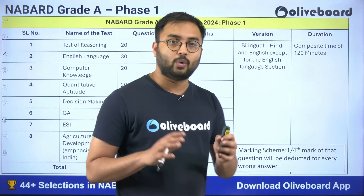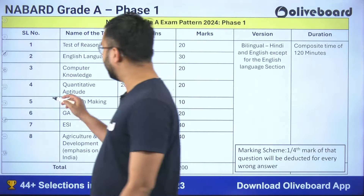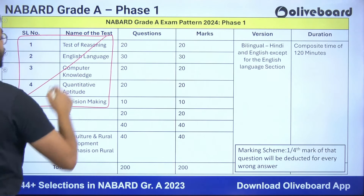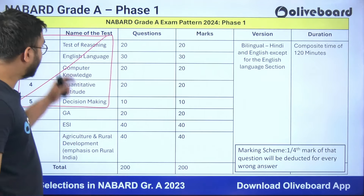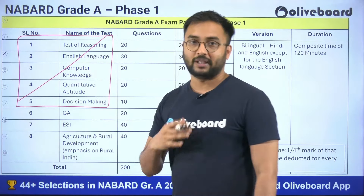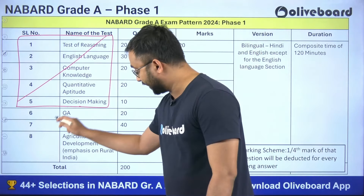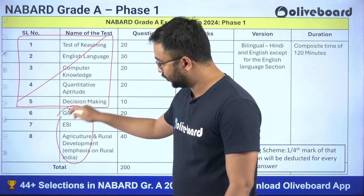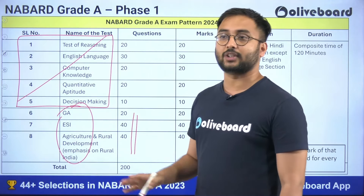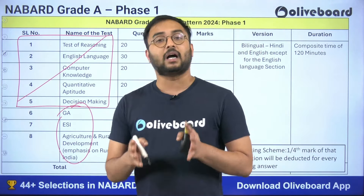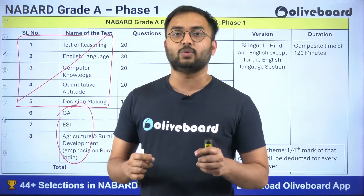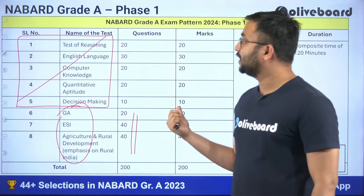I hope you know the exam pattern well. The qualifying section is just for qualification — you have to clear the sectional cutoffs only, and the tally of those marks will not be considered. The merit cutoff is based on these 3 sections, and your total marks scored out of all 3 merit sections will be counted so that you proceed to Phase 2 examination. That is why it becomes very important in NABARD Grade A Phase 1 exam.